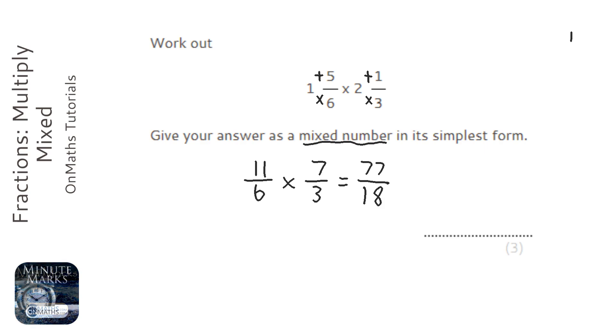I could just do the 18 times table. So 1 lot of 18 is 18, 2 lots of 18 will be 36, 3 lots of 18 will be 54.